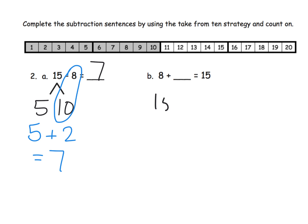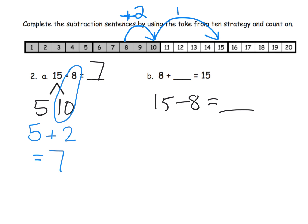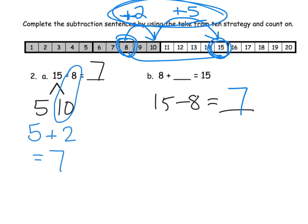Over here, we still have 15 minus 8 equals what, but now we're going to think of it as an addition problem because we're using the count on method. We start with 8, go up 2 to get to 10, and then go up 5 to get to 15. So 2 plus 5 gives us 7. That tells us 15 minus 8 is 7, and 8 plus 7 is 15. So you've got your take from 10 strategy, or you've got your count on strategy.